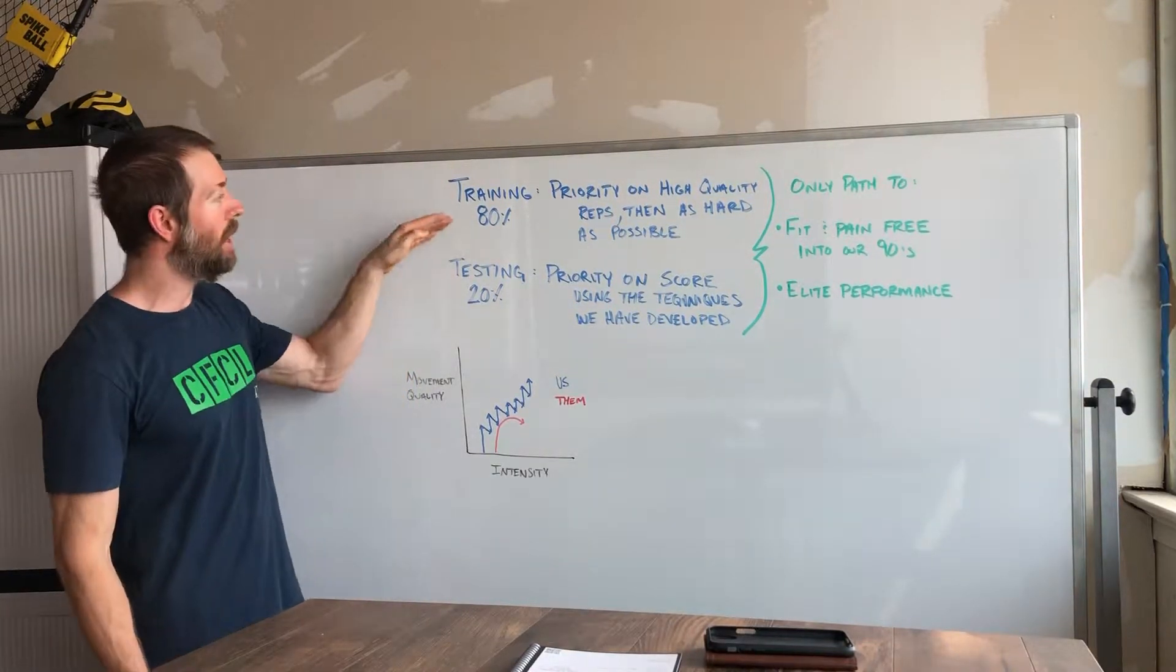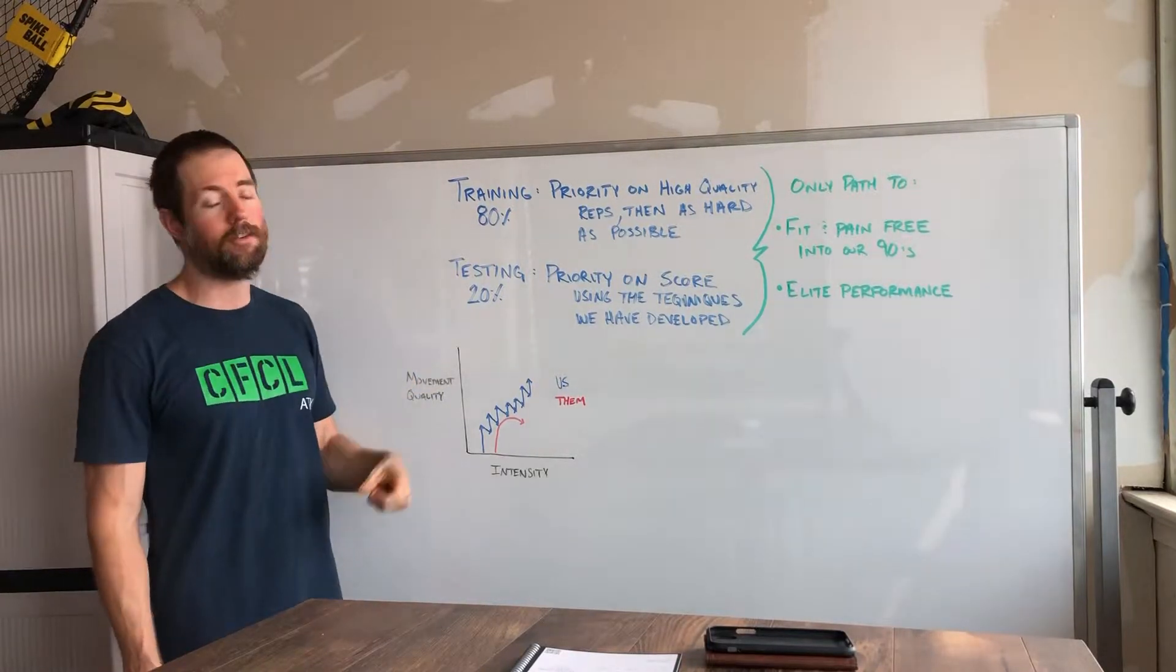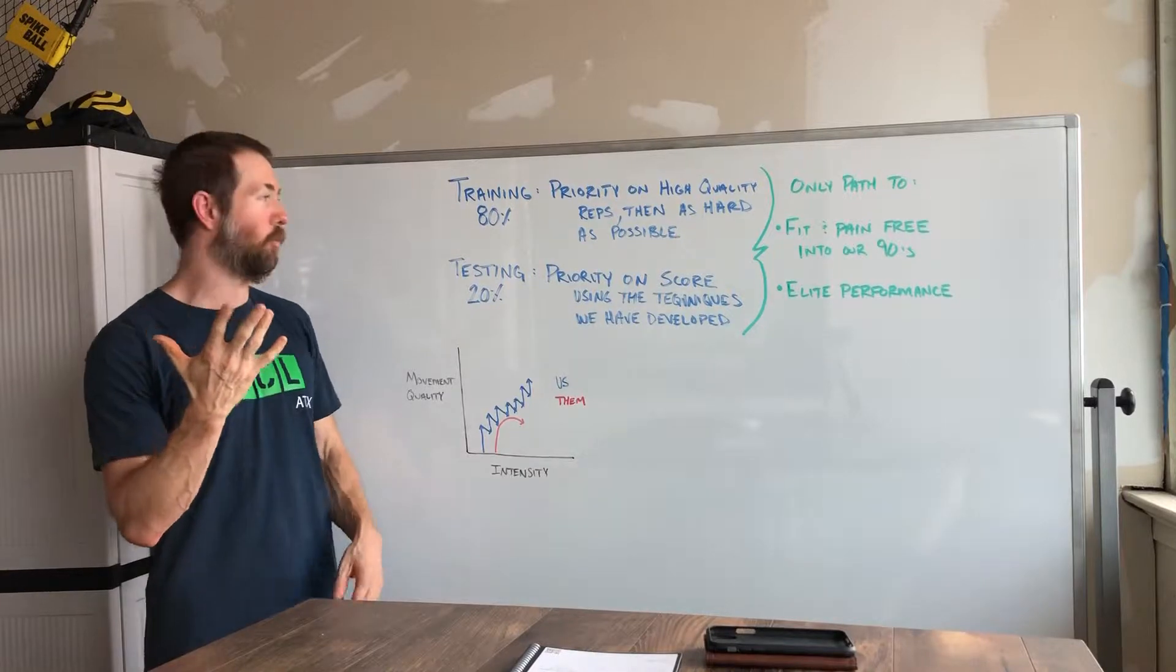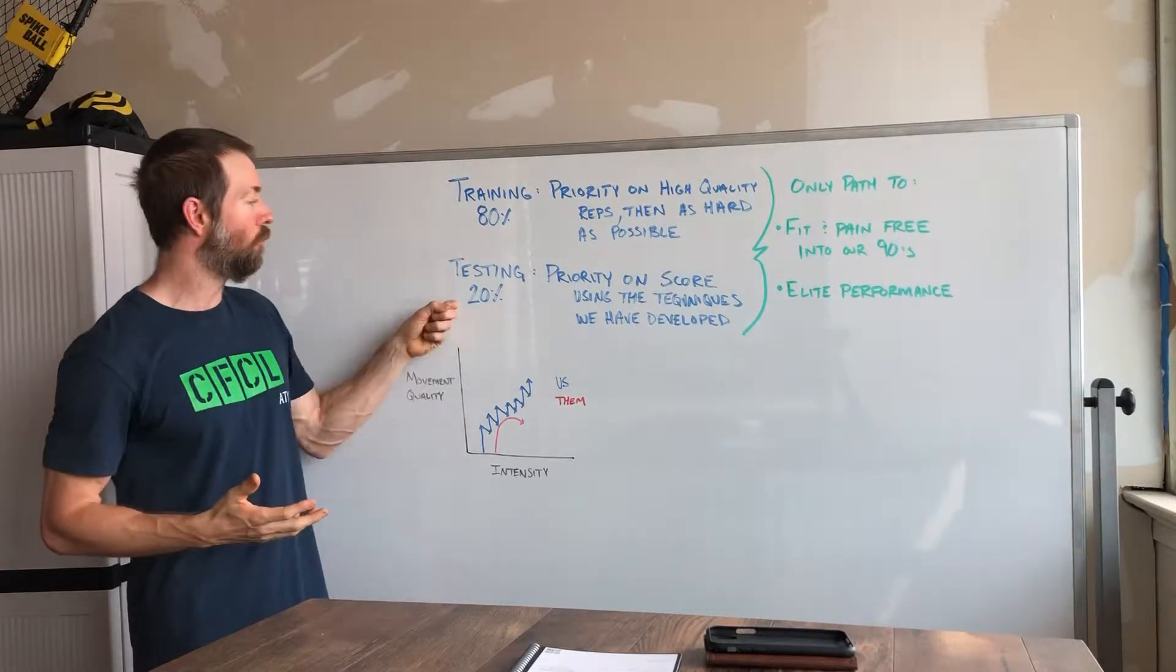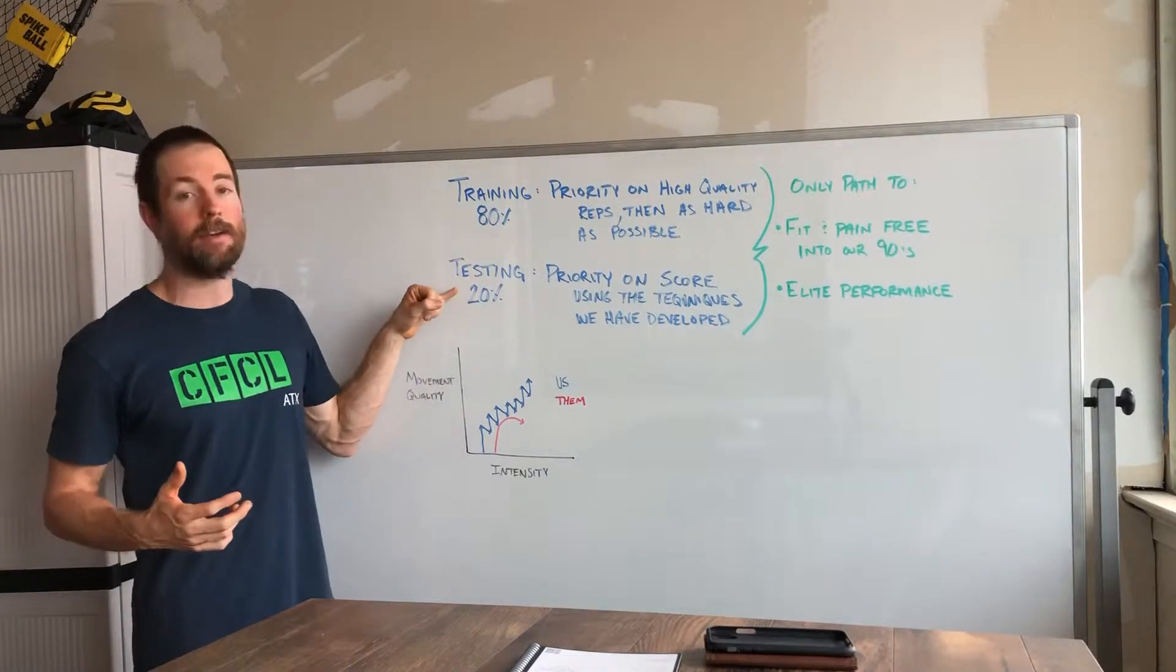What we like to do here is 80% of our workouts we consider training workouts, 20% we consider testing. So if we take five workouts a week, 80% would be four out of those five, 20% would be one out of those five workouts where we would be testing.